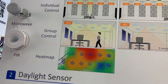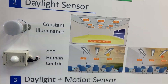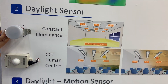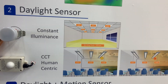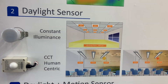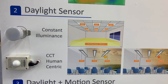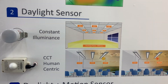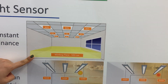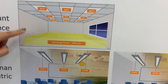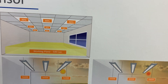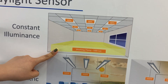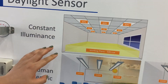I would also like to introduce the daylight sensor. This is a constant illuminance daylight sensor, which is ideal for industrial applications where there are skylights or other sources of natural light. You can set a working target of, for example, 500 lux, and all lamps bound to the sensor will maintain that 500 lux level automatically.